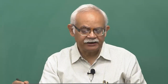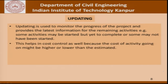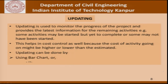Updating is used to monitor the progress of the project and provides the latest information for remaining activities. For example, some activities may be started but yet to complete, or some may not even have started. We have to keep updating our bar charts and CPM charts. It also helps in cost control, as the cost of an activity going on might be higher or lower than estimated. This updating can be done through bar charts or on the CPM network. In today's discussion, we will largely focus on using bar charts for the purpose of updating.